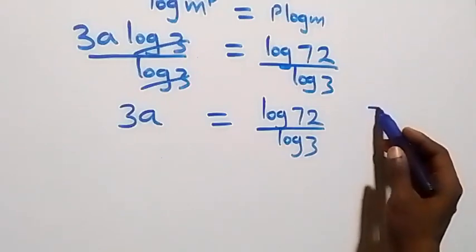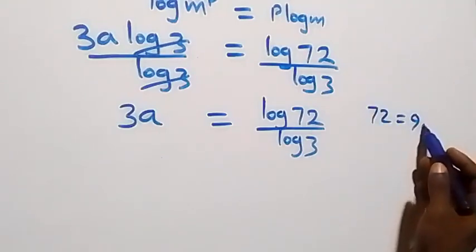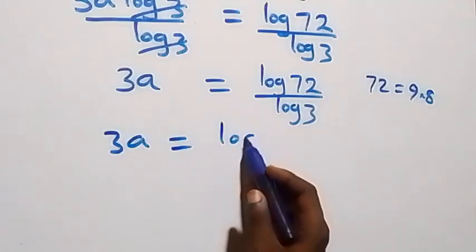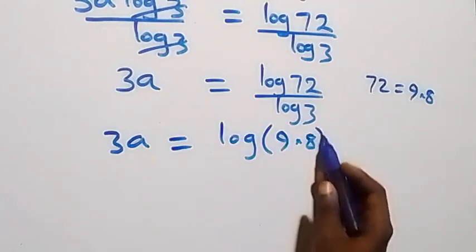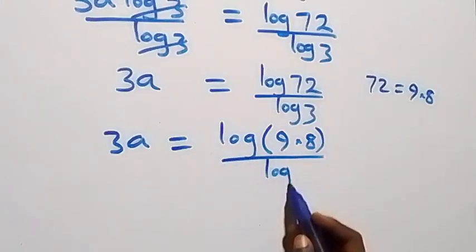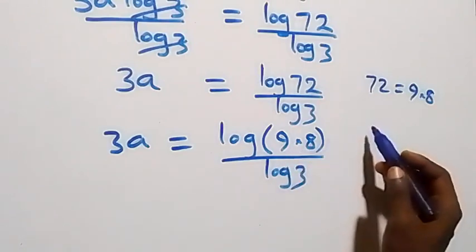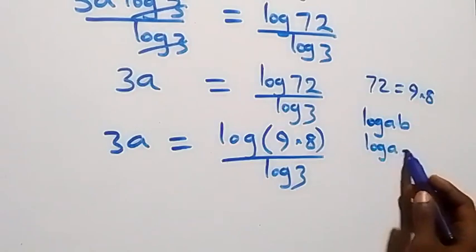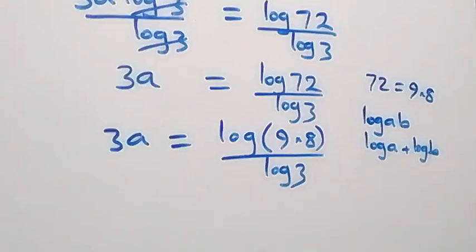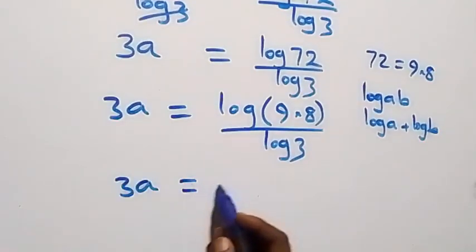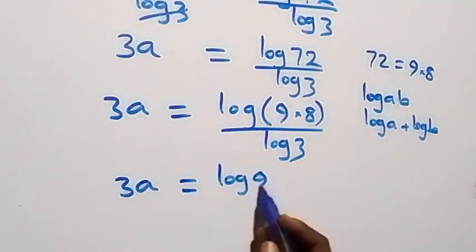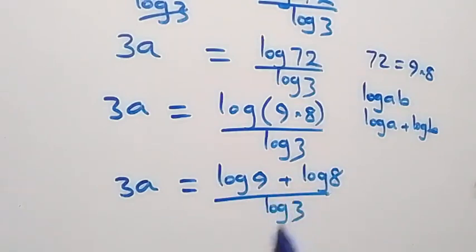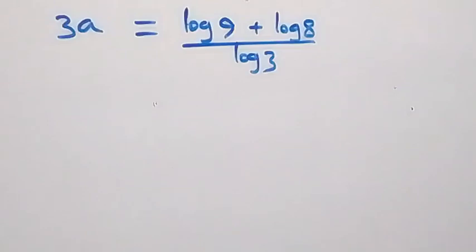Next step: we can write 72 as 9 times 8. So what we have becomes 3a equals log(9 times 8) over log 3. Applying the law of logarithm — log(a times b) is the same as log a plus log b — we have 3a equals log 9 plus log 8, all over log 3.